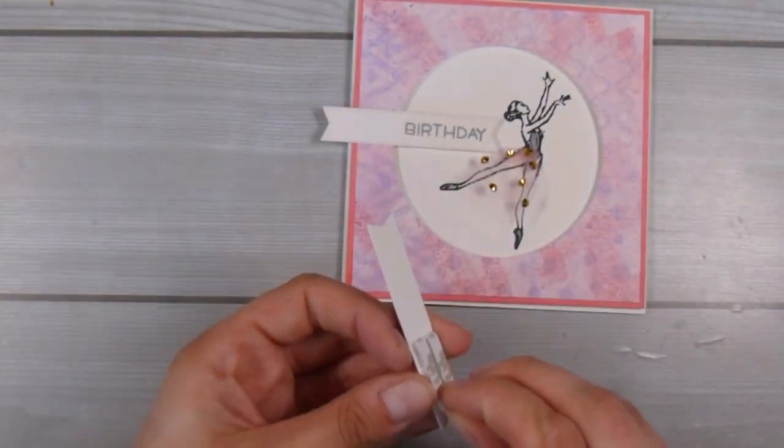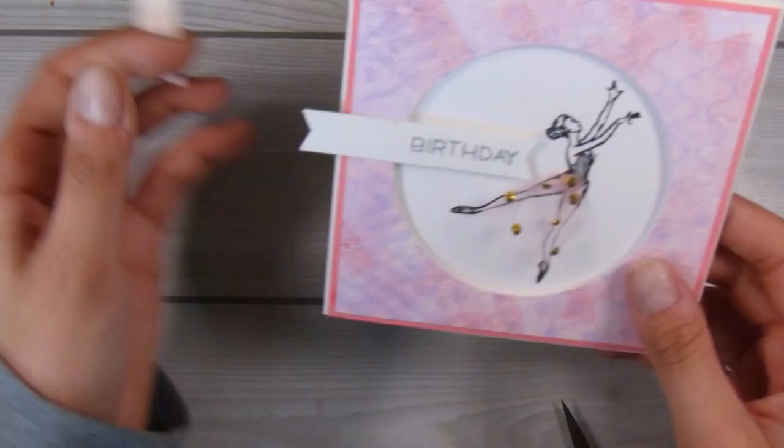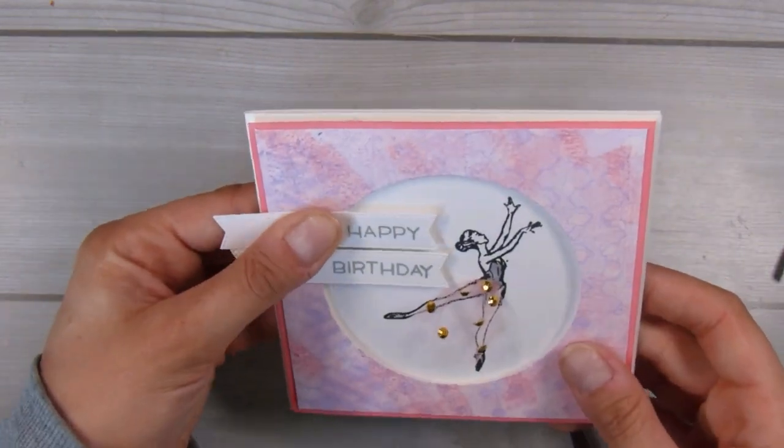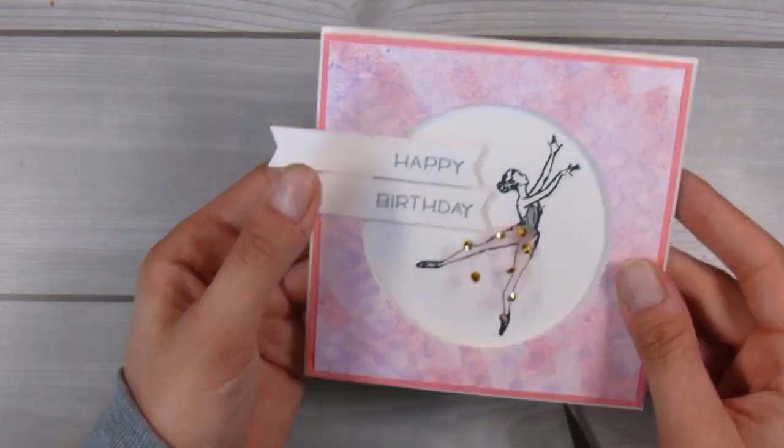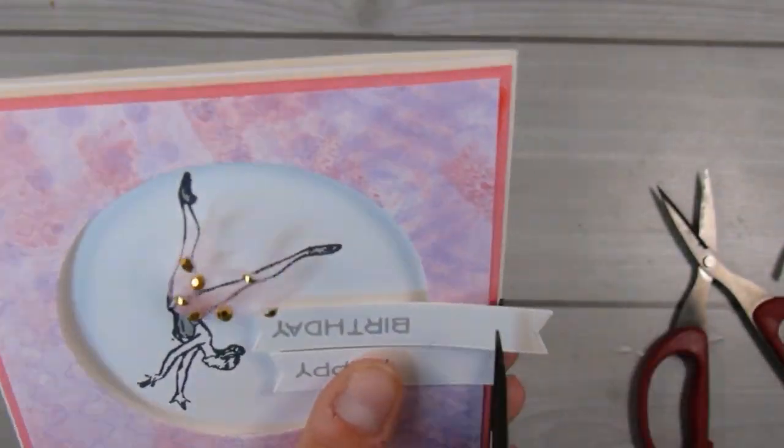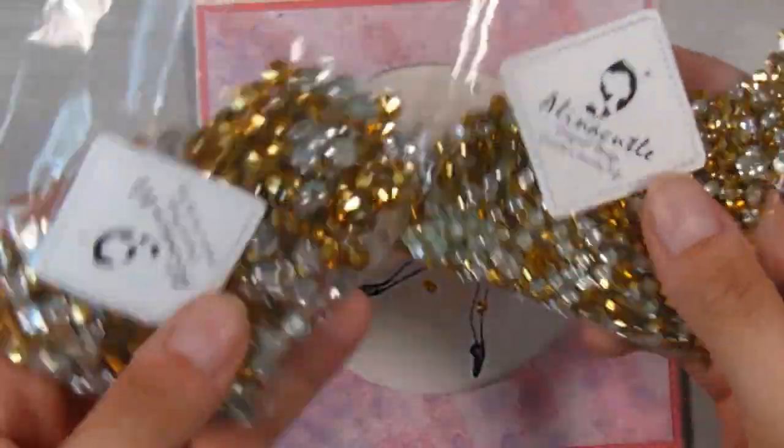All I'm going to do now is add a few of those gold gems which actually come in two different sizes and I will have them linked down below. I'm going to add some of those in the top left and the bottom right hand corners just to kind of pull the card together and make it all cohesive.